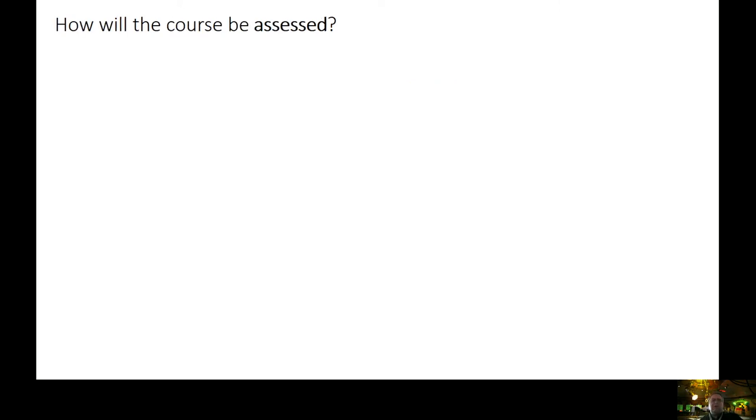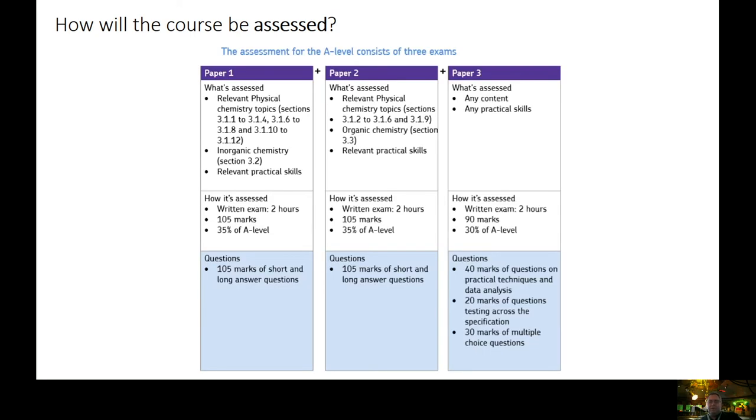So the assessment of the course. The assessment is by two means. At AS, there's only two papers. At A-level, there are three papers. It's broken down into three exam papers. Each of these are two hours long. The first paper deals with more the inorganic chemistry, that's year 12 and year 13 inorganic chemistry. The paper two is the organic chemistry. The paper three is basically absolutely anything and everything.